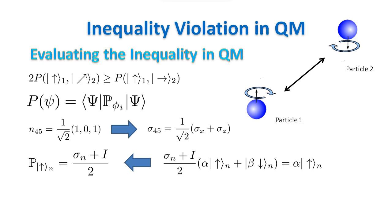This is because this operator picks up the up state of a wave function and removes the down state. You can check this yourself easily. The same applies to the tau matrices on the second particle. Finally, we need to know that the projector operator for a simultaneous measurement on the two particles is given by the product of the projector operators for the two single measurements. This is because the two measurements are compatible and the two projector operators commute. You can check this yourself easily.